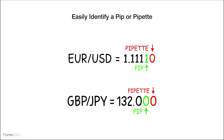How do you easily identify a pip or pipette? For EUR/USD, if we have 1.11110, the pip will always be the fourth digit after the point. The last digit is always the pipette with most brokers. Most brokers show five digits for most pairs except yen pairs. So the fourth digit is the pip and the fifth is the pipette. For yen pairs, you identify the pip at the second digit after the point — for example, in 111.00, the second digit is zero, that's the pip, and the last digit is the pipette.